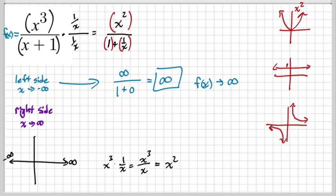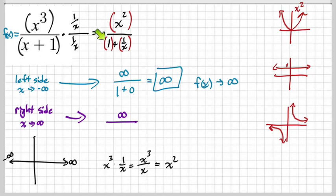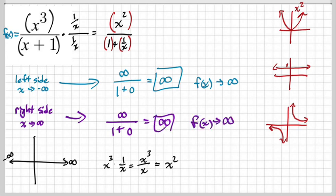Hang with me because I'm going to do the right side now. On the right side: what's x squared approaching? Positive infinity. And the constant? One. And 1 over x? Zero. So what is this equal? Infinity. So our answer is f of x is approaching infinity on the right side as well.